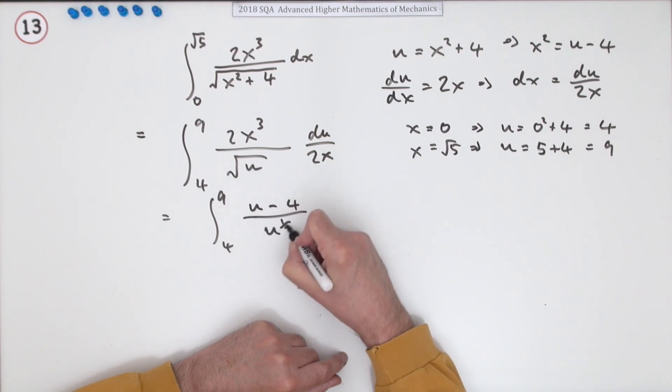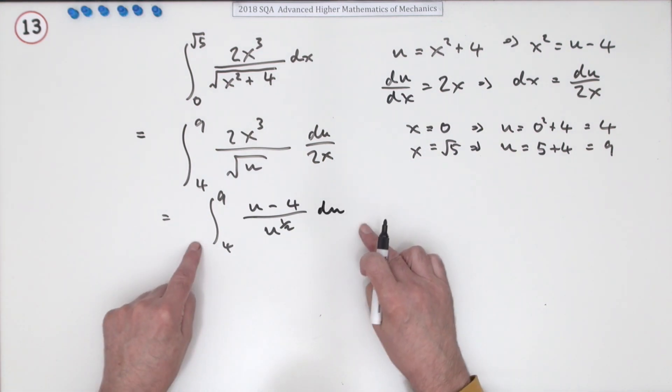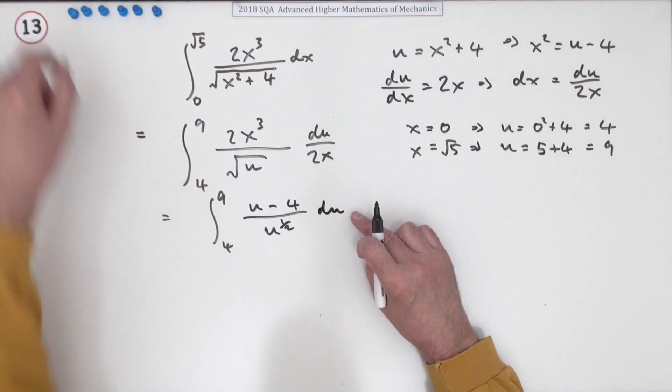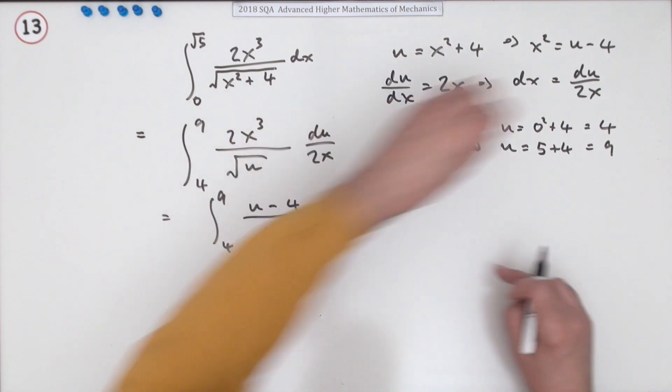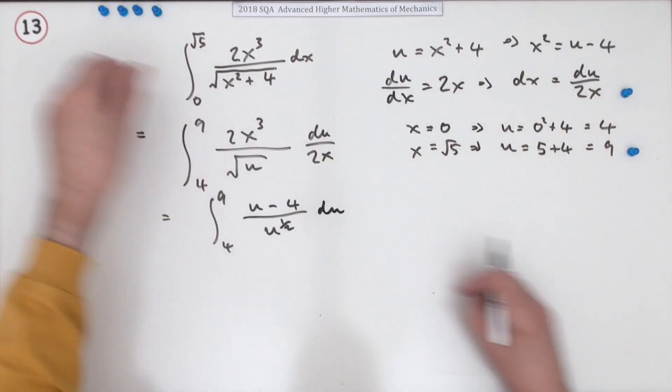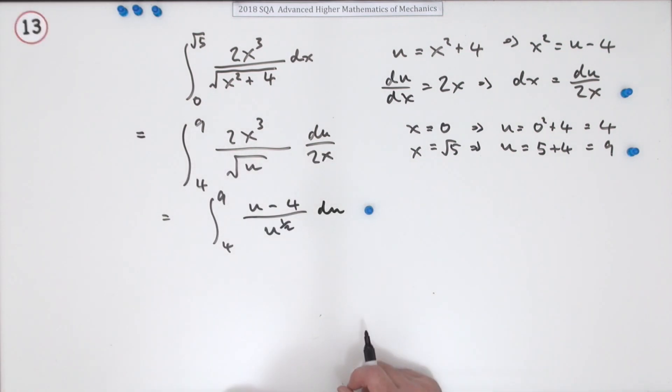When this cancels down, I'm left with x², which is (u - 4) over √u. I'll write that as u^(1/2) du. This was the third mark. The first mark was for the differential, the second for changing the limits, and the third for getting everything in terms of u.